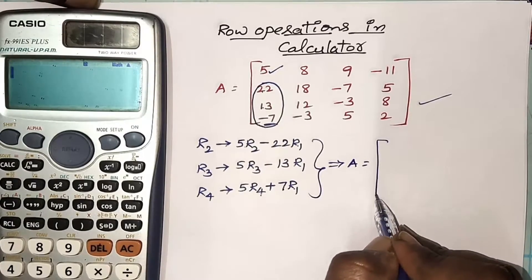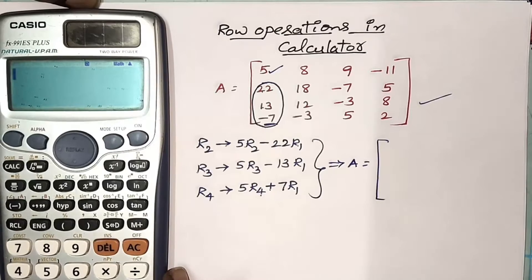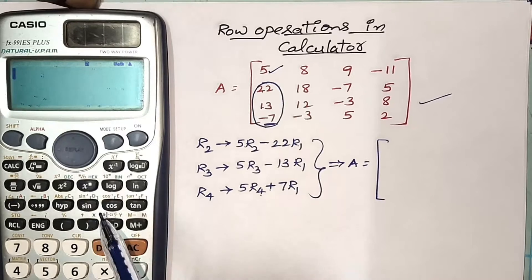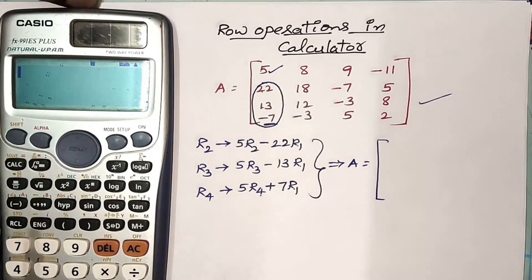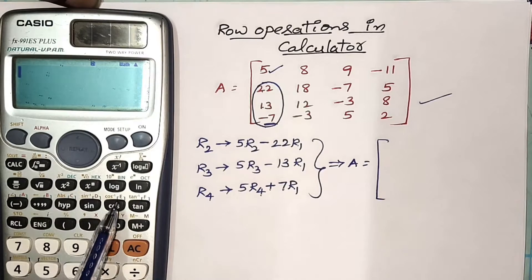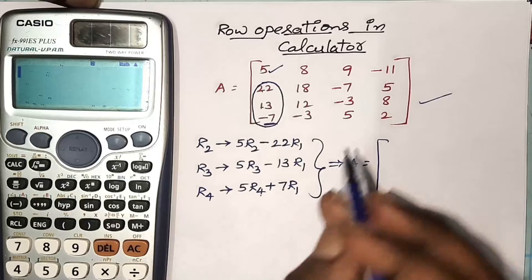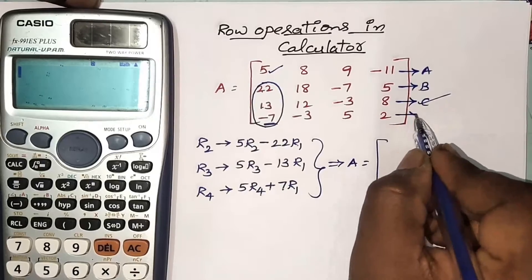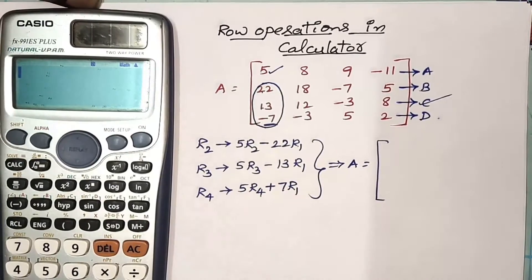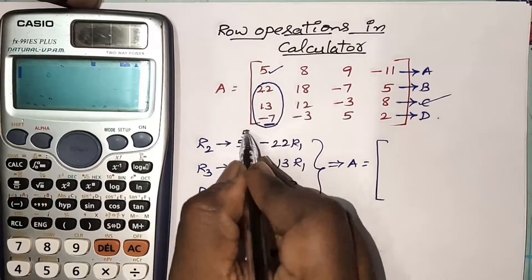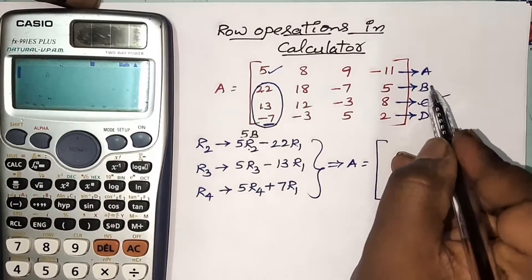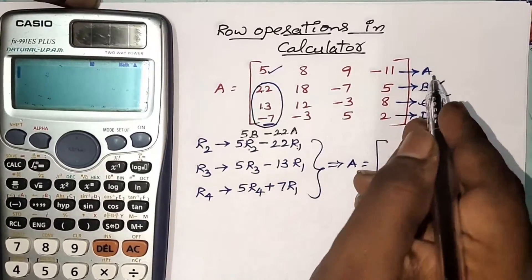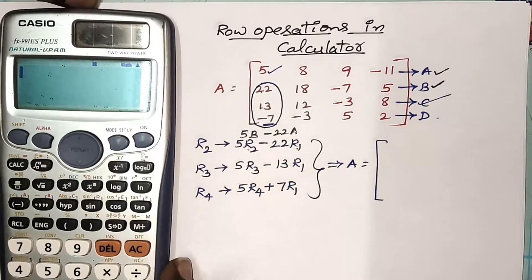Now I am going to operate these operations in our scientific calculator. Everybody knows that R1, R2, R3, R4 representations are not there in our calculator. In general, our calculator has the letters capital A, B, C, D, E, F in pink color. That's why I am taking the first row as A, second row as B, third row as C, and the last row as D. So the first operation becomes 5B minus 22A, because the second row is represented by capital B and the first row by capital A.